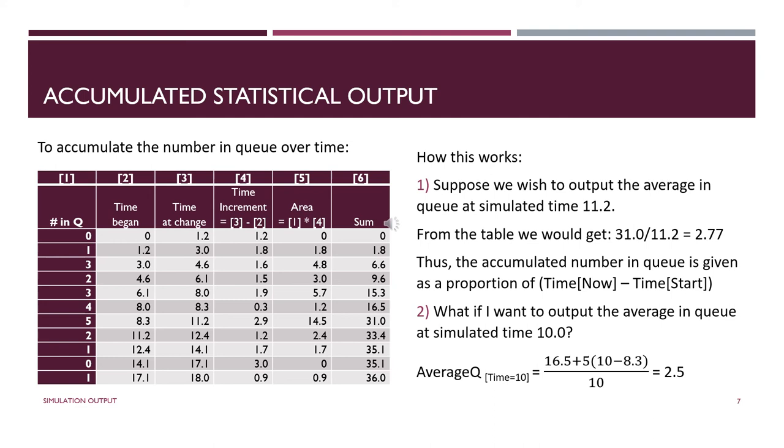Now, what if I want to get the average number of customers in the queue for a time that I don't have here because it was in the middle of a time interval? Well, I prorate it then. I mean, we can figure it out. 10 is in between 8.3 and 11.2. We take 16.5, which is the sum at the end of time 8.3, and then we have five people in queue between 8.3 and 11.2, but we only want 8.3 to 10. That's how we get that. We divide the whole thing by 10 because that's the total time we're considering, and we get two and a half. Two and a half on average, two and a half people, customers in the queue during those 10 minutes.